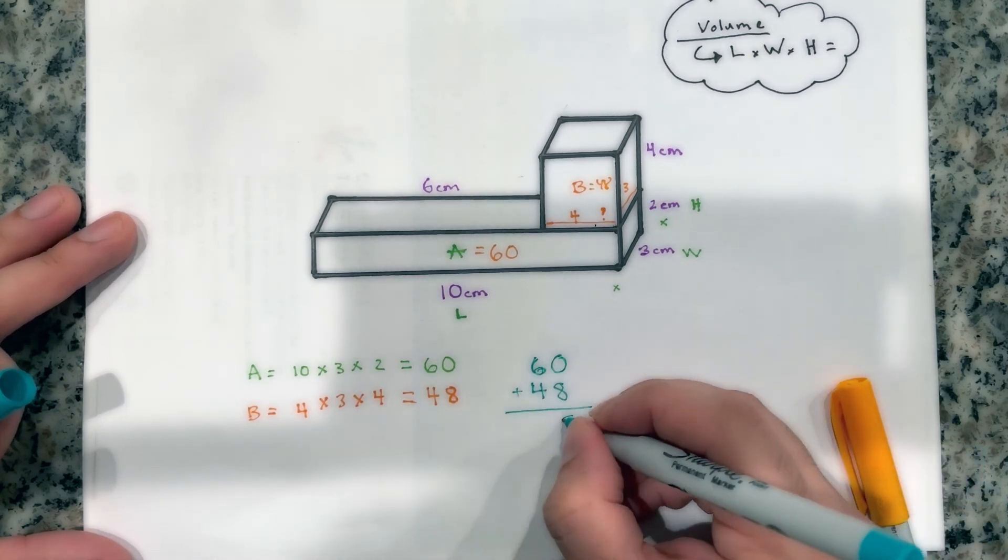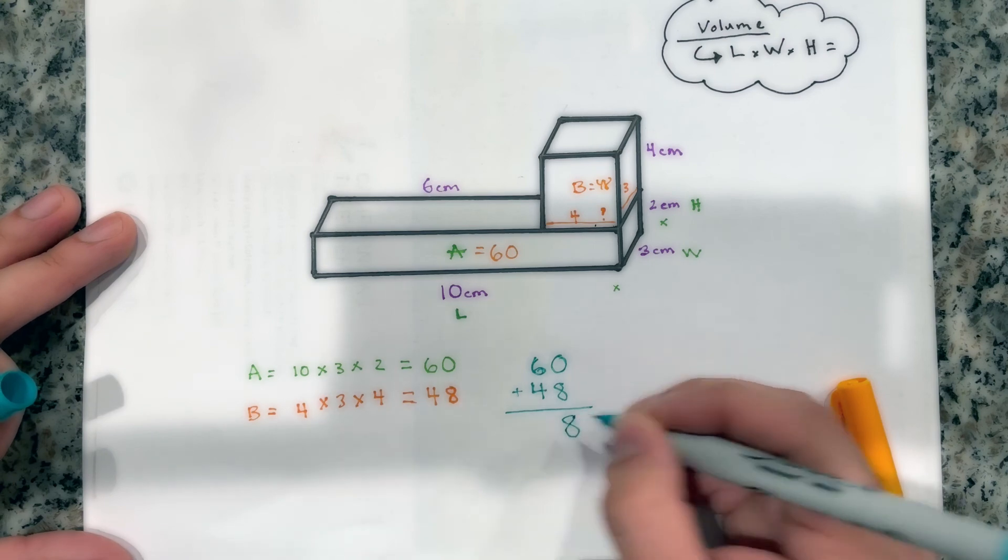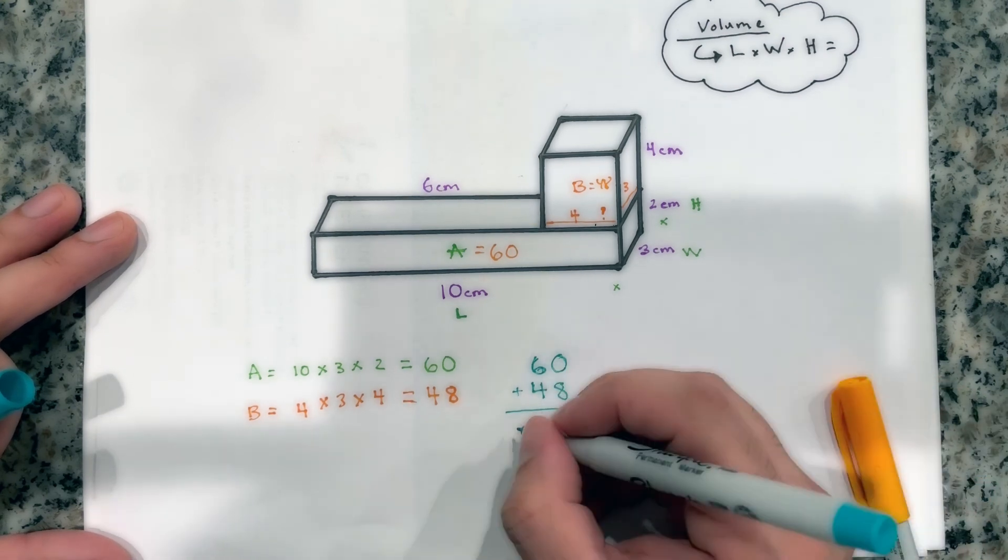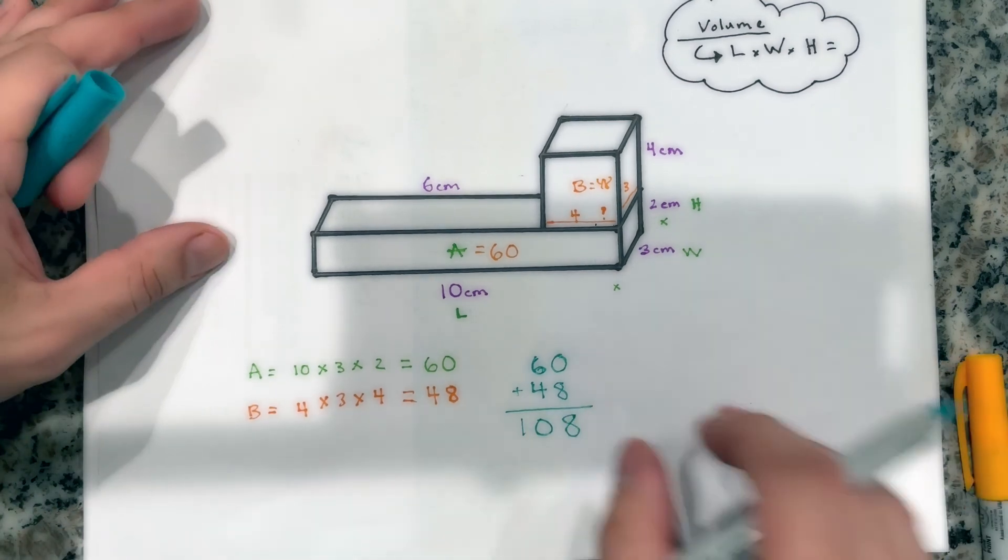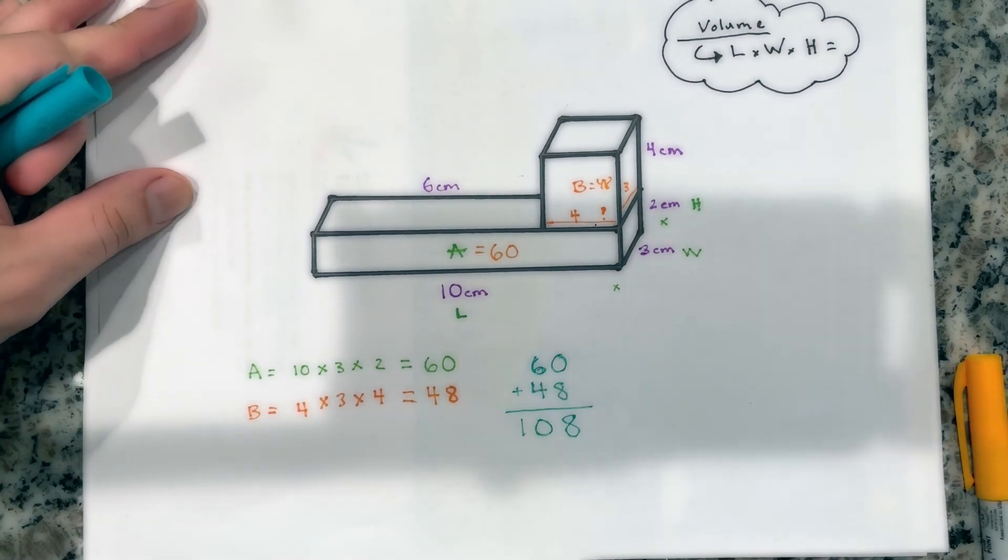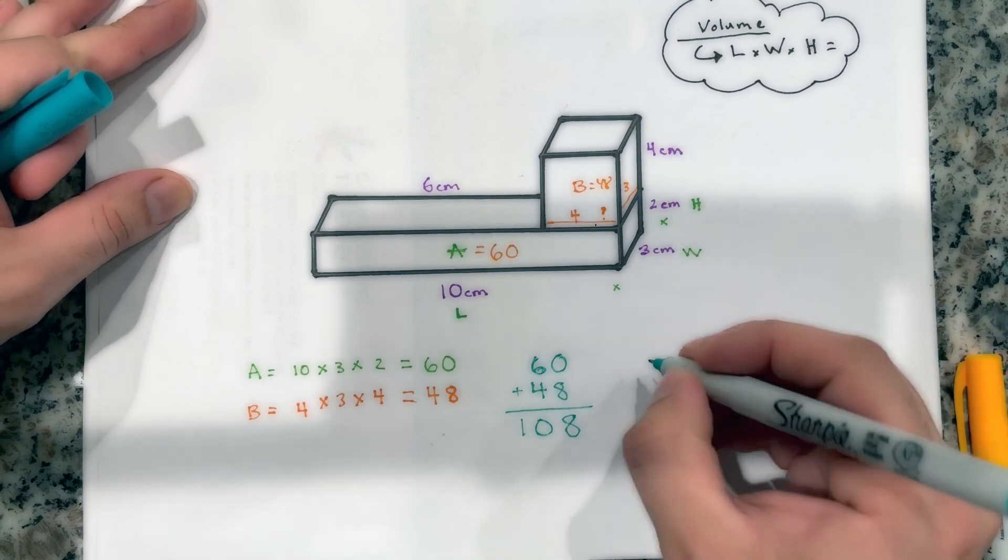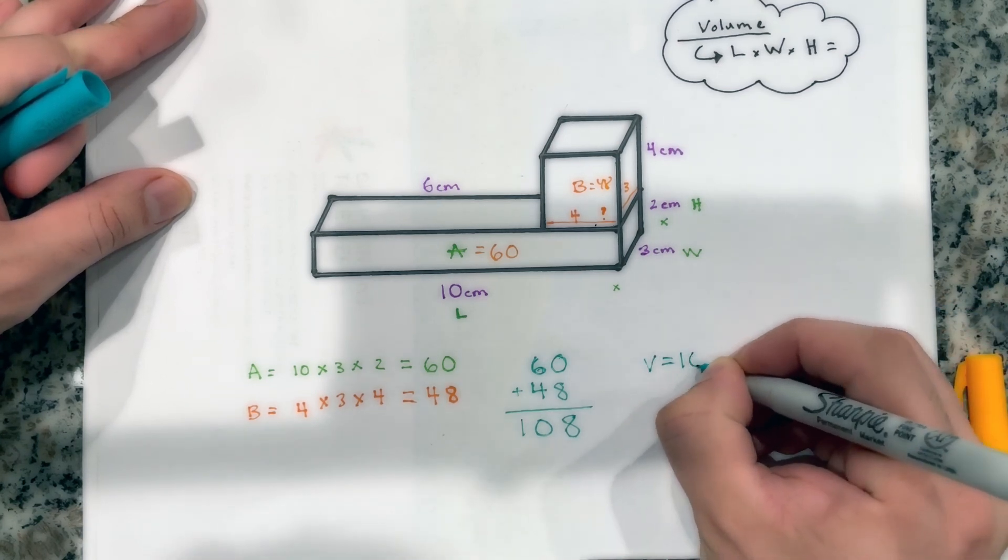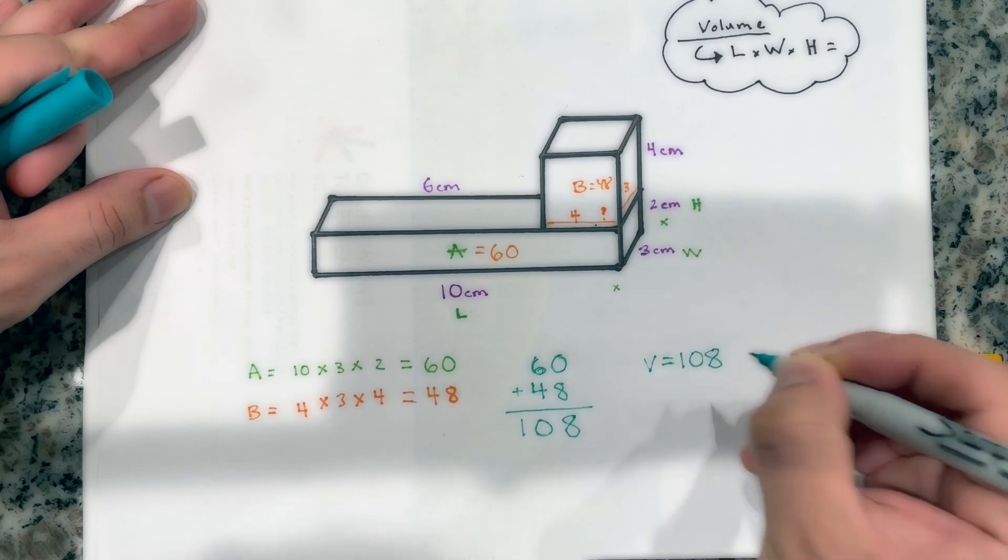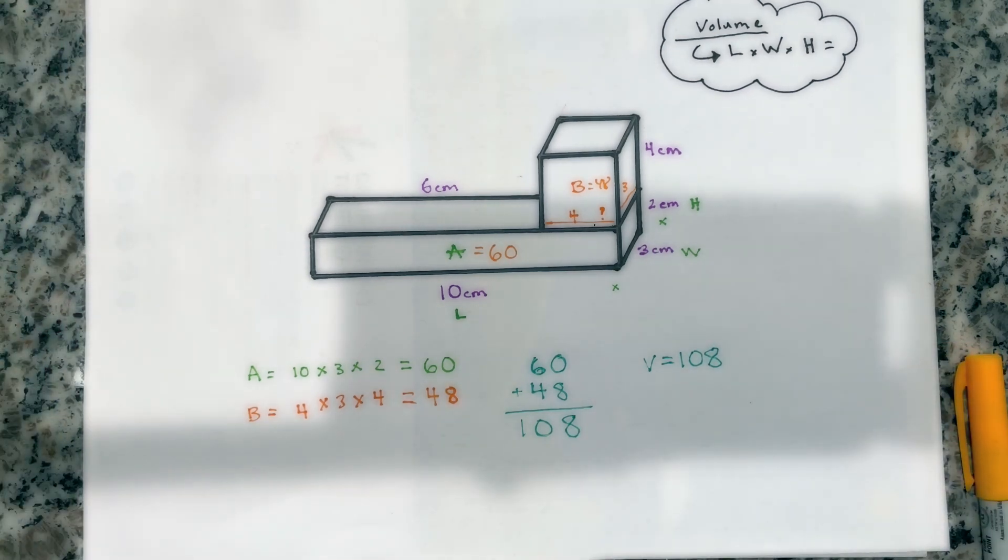And just like you learned in first grade, 8 plus 0 is 8, and 6 plus 4 is 10. So now we found the volume of this composite rectangular prism, and our volume will equal to 108. Perfect. And there you go. That is how you find the volume of a composite rectangular prism.